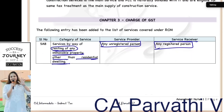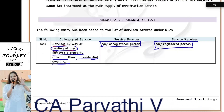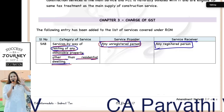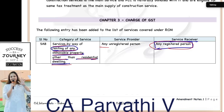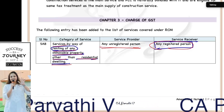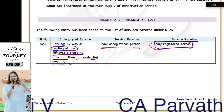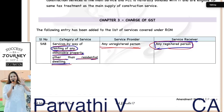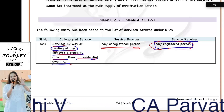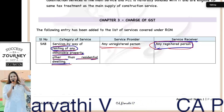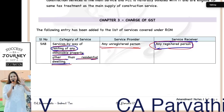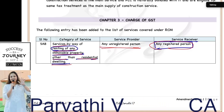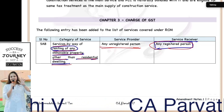I hope this is clear. Service by way of renting of immovable property other than residential dwelling by an unregistered person to a registered person is taxable under RCM. Whenever you learn RCM, you have to divide that into three: first, look at who the supplier is; second, what is the nature of service; and third, who is the recipient.